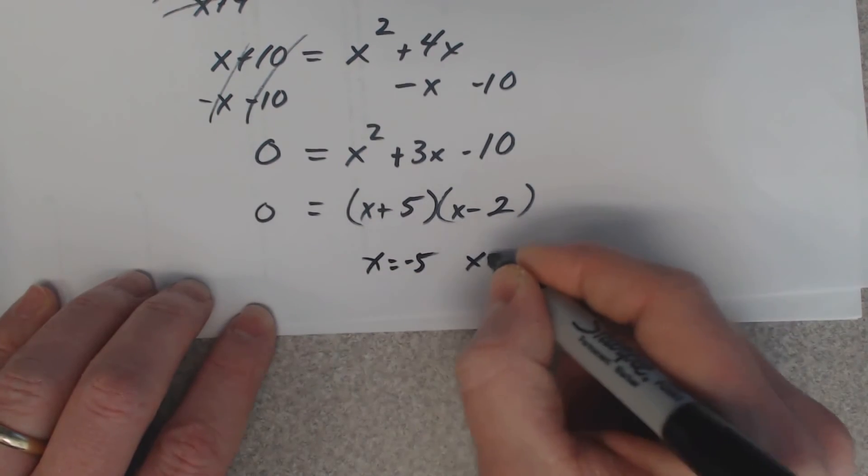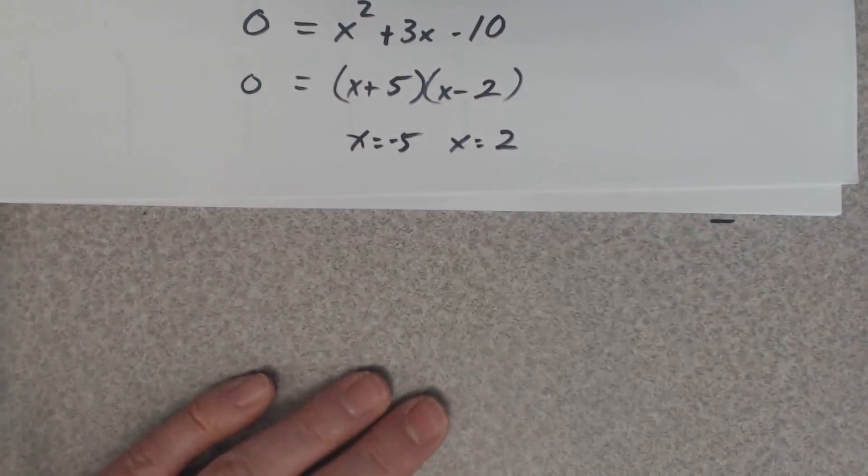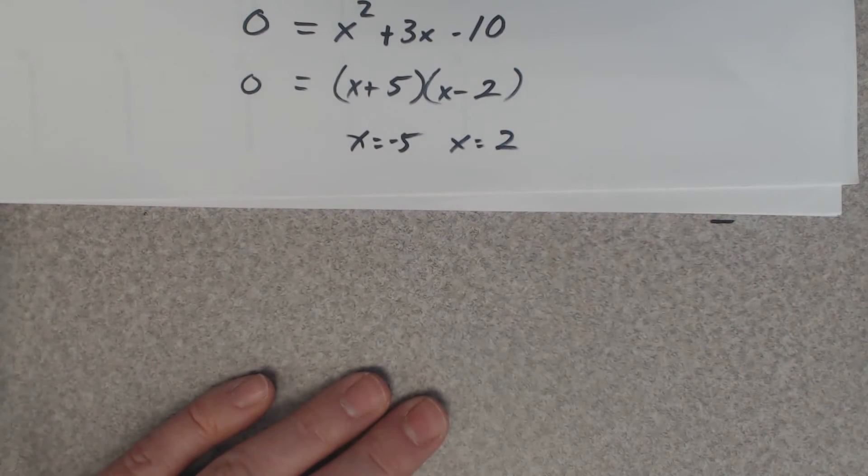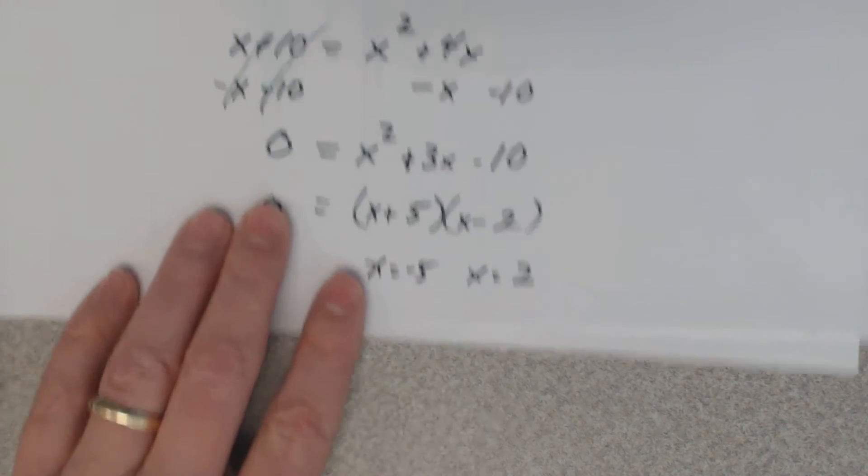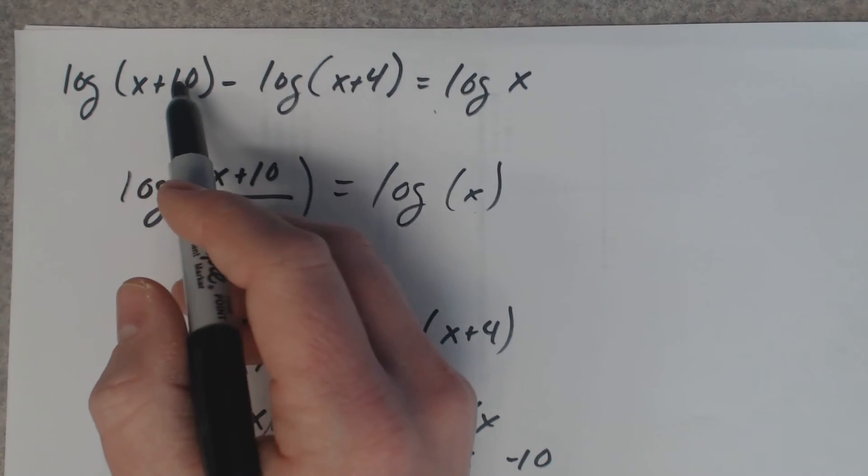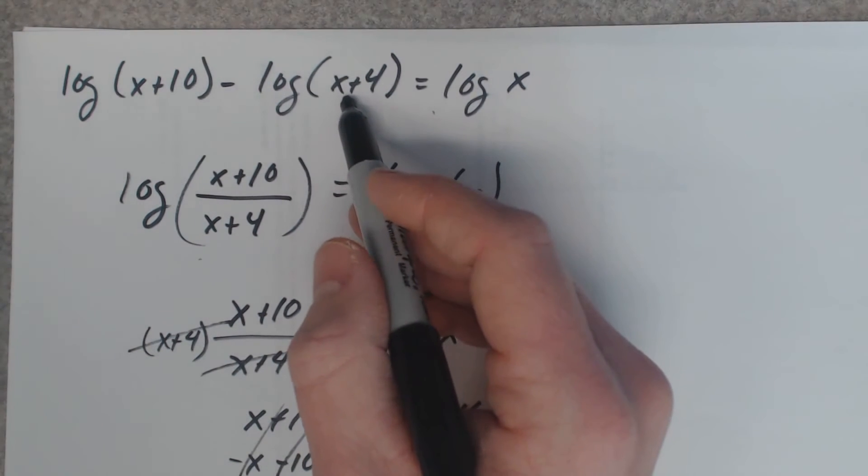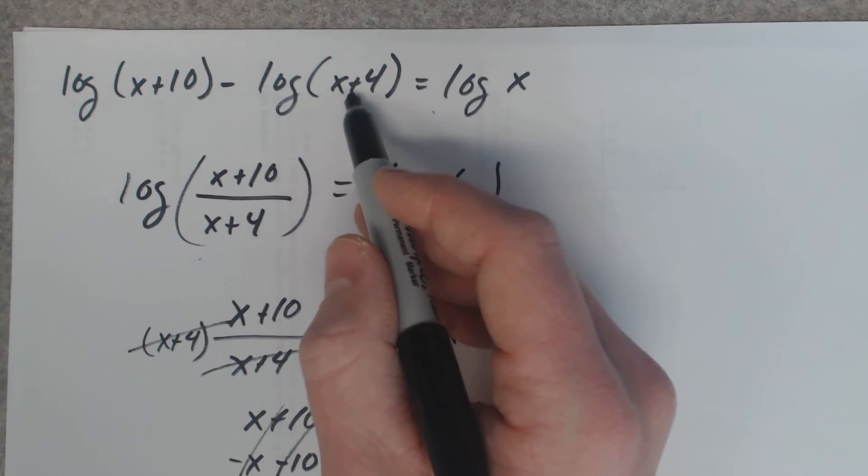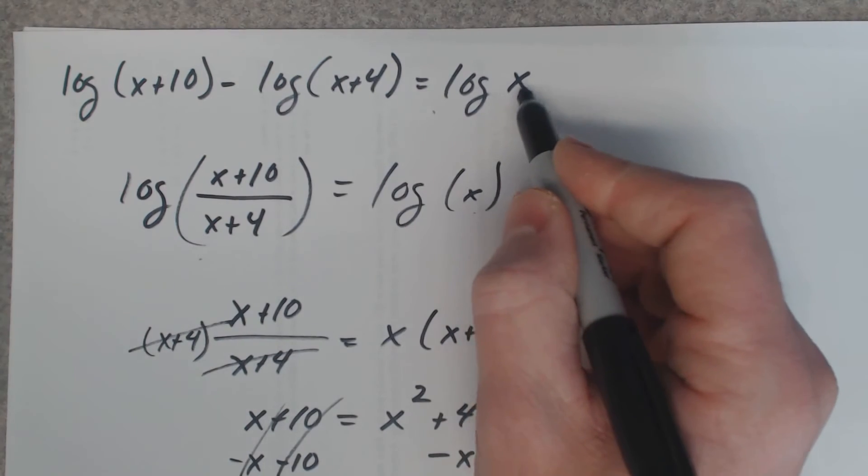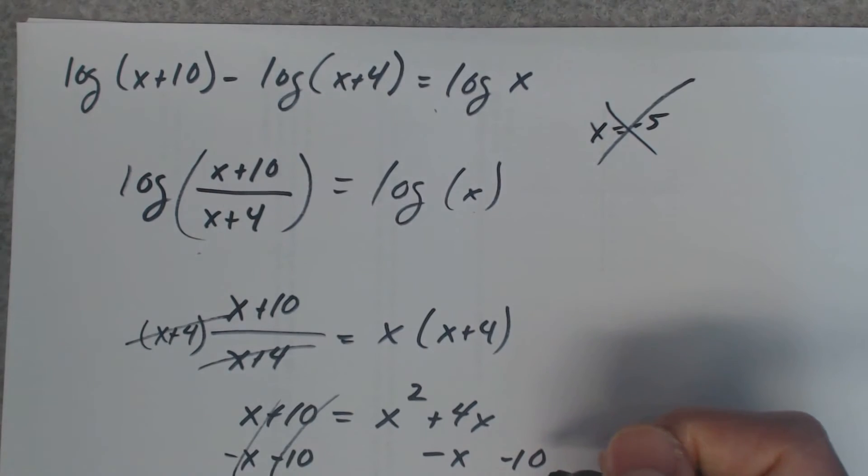So, x equals negative five and x equals two. Now, you've solved this equation, this quadratic. You need to make sure that it works in the original. Remember, you can't take a logarithm of a negative number. So if I plug a negative five in here, if I plug a negative five in, I'll get five, which is fine. Plug a negative five in right here, it won't work. I get a negative one. And if I plug a negative five in here, it definitely won't work. So negative five is not an answer.